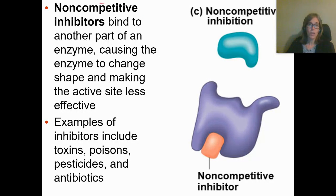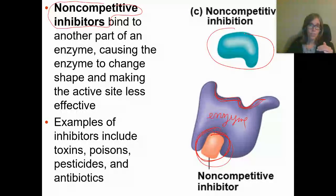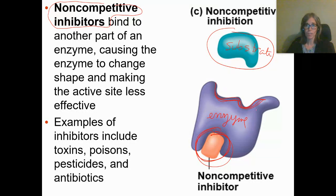The other type is non-competitive inhibitors. These do not compete for the active site. The non-competitive inhibitor binds to a different site, and that changes the shape of the enzyme, making the active site either completely wrong or at least a little bit worse than it was. If the shape is completely wrong, you'll get no reaction while that inhibitor is there. If it's just morphed a little bit, it may have decreased the enzyme's affinity for the substrate, which just slows it down. So non-competitive inhibitors bind to another part of the enzyme, causing it to change shape and making the active site either less effective or not effective at all.